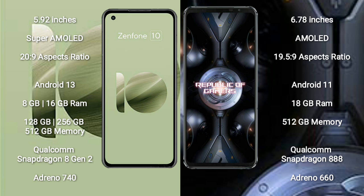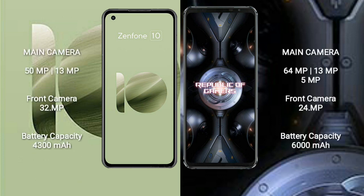The Zenfone 10 is powered by the Qualcomm Snapdragon 8 Gen 2 processor with an Adreno 740 GPU. The ASUS ROG Phone 5 Ultimate comes with 18GB RAM and 512GB internal storage, powered by the Qualcomm Snapdragon 888 processor with an Adreno 660 GPU. The Zenfone 10 features a dual rear camera setup: 50MP plus 13MP, and a 32MP front camera.